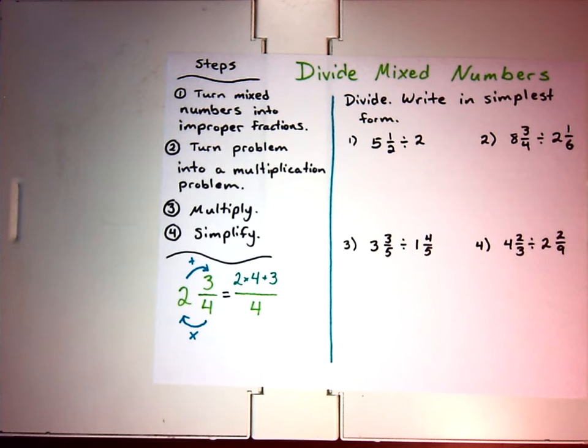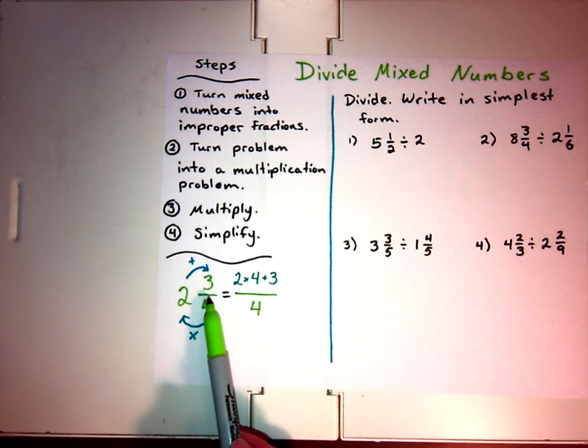I have an example of how you turn a mixed number into an improper fraction down here at the bottom. In the example of 2 and 3 fourths, what you do is simply say we're going to take these two, the whole number and the denominator, we're going to multiply them. So 4 times 2, and then when you get that solution, you're going to add it to the numerator.